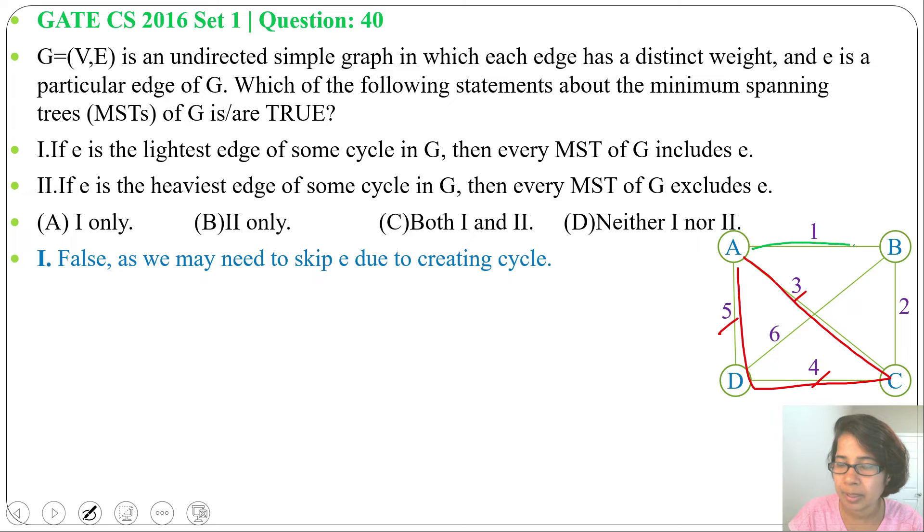Next B, C, weight is 2, next C, D, weight is 4. We will exclude weight 3. So this weight 3 is the lightest weight of A, C, D cycle but we are excluding it, we are not including it in minimum spanning tree.